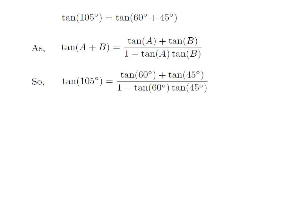To find out tangent of 105 degrees, we just have to replace tangent of a with tangent of 60 degrees and tangent of b with tangent of 45 degrees in the above formula. So, tangent of 105 degrees equals tangent of 60 degrees plus tangent of 45 degrees, upon 1 minus tangent of 60 degrees into tangent of 45 degrees.